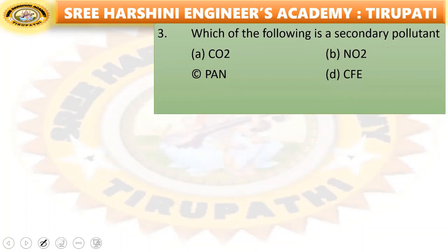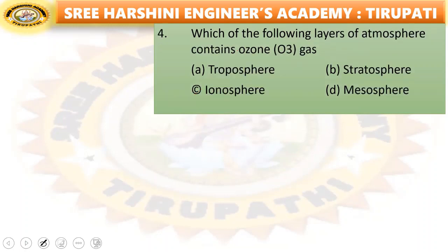Next: which of the following is a secondary pollutant — CO2, NO2, PAN, or CFC? CO2 is carbon dioxide, NO2 is nitrous oxide, CFC is a gas — but PAN is the secondary pollutant. PAN is the right answer.